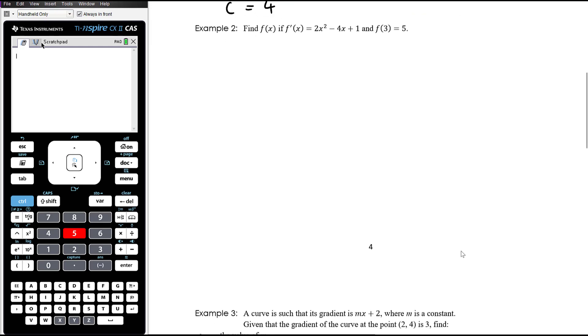Find f(x) if f'(x) is equal to 2x squared minus 4x plus 1, and f(3) is equal to 5. So this is essentially the same question, it's just in function notation as opposed to Leibniz notation in the previous example. Again, it's the same idea that if we want to find f(x), we're going to need to do the anti-derivative of the derivative. That will take us back to f(x). So in this case that's the anti-derivative of 2x squared minus 4x plus 1 with respect to x.